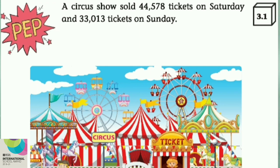A subcenter sold 44,578 tickets on Saturday and 33,030 tickets on Sunday. The number of tickets on Saturday is equal to 44,578. The number of tickets on Sunday is equal to 33,030.